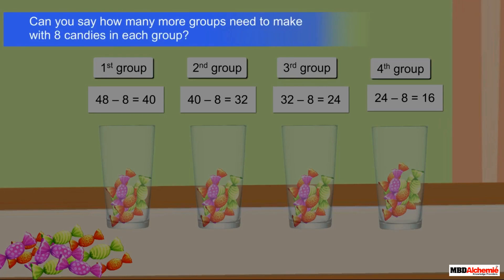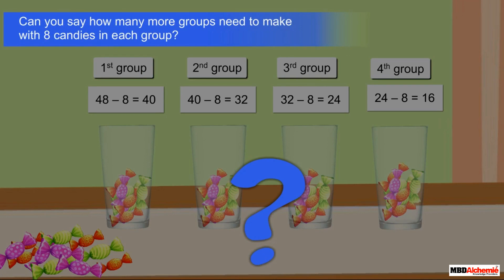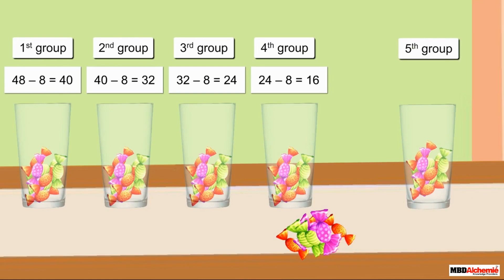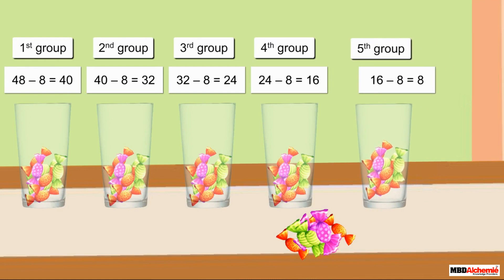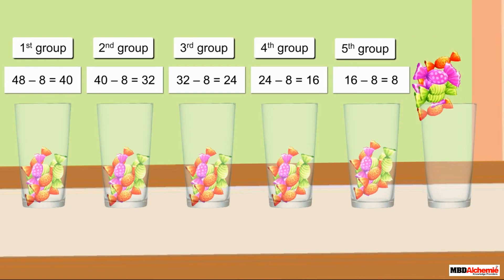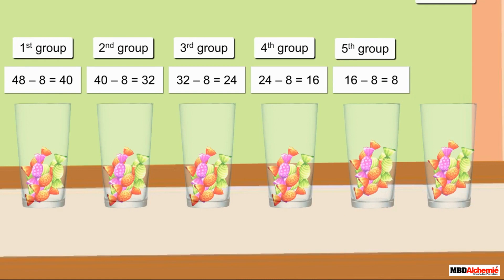Can you say how many more groups need to be made with eight candies in each group? Eight candies in the fifth group and only eight candies are left. Eight candies in the sixth group — now no candies are left.